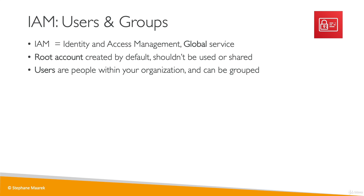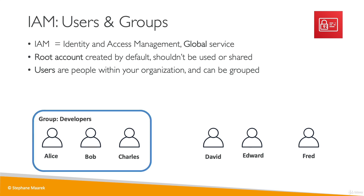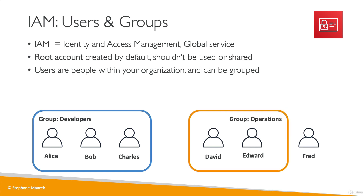Let's take an example. We have an organization with six people: Alice, Bob, Charles, David, Edward, and Fred. Alice, Bob, and Charles work together — they're all developers — so we're going to create a group called the developers group containing Alice, Bob, and Charles. And it turns out that David and Edward also work together, so we're going to create an operations group. Now we have two groups within IAM.